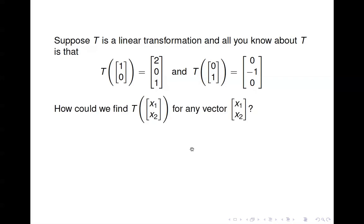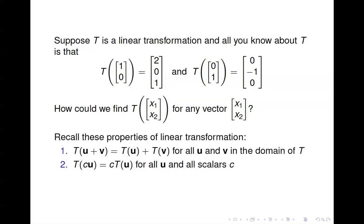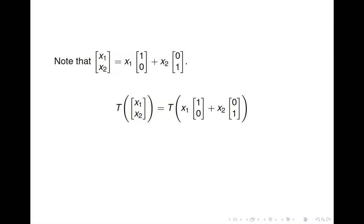How could we find a general rule to determine T of a generic vector x? That is, T of (x1, x2) for any vector (x1, x2). To get this just based on the information we have, we need to use the properties of a linear transformation. Notice that we can write a generic vector (x1, x2) as x1 times (1,0) plus x2 times (0,1).